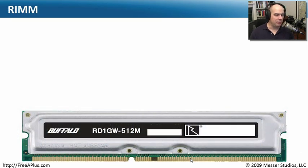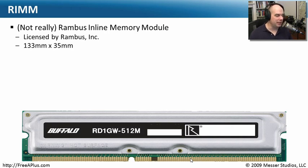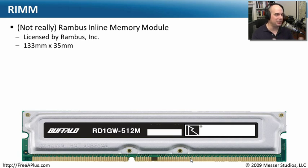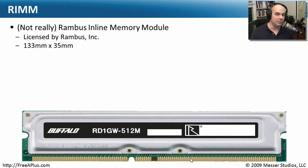About that same time frame, when we were trying to get SIMMs and memory to move things faster, a new memory type came out called RIMM. Although we've referred to it in the past as Rambus Inline Memory Module, this was created by a company called Rambus. It doesn't really stand for anything — they called it RIMM because it sounds like SIMM and DIMM. Almost everybody refers to it as RIMM anyway.